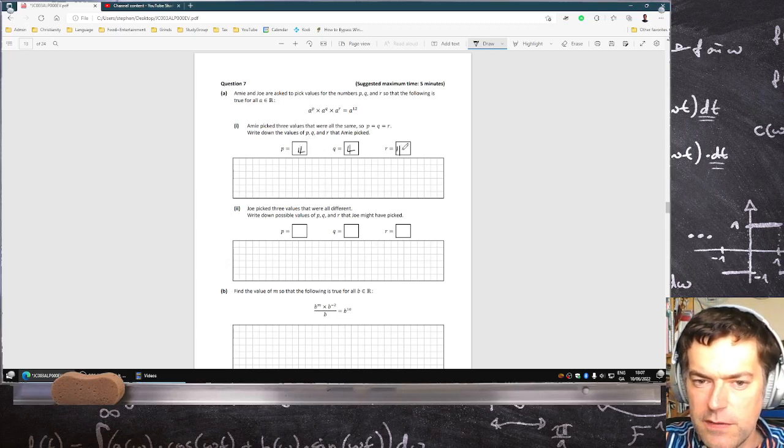4, 4, 4. Write down the values of P, Q and R that Amy picked. And she picked them so that P... Yeah, okay.